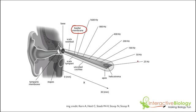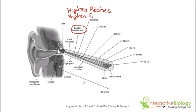We have a number of different frequencies associated with these different sections. Here we have 25 hertz, which is a low frequency, and as we come over to the thinner section we have higher frequencies up to 1600 hertz and all the way up to about 20 kilohertz. So we go as low as 25 hertz and as high as 20 kilohertz. Higher pitches are the result of higher frequencies, and lower pitches come from lower frequencies — we're talking about the frequency of the sound wave.